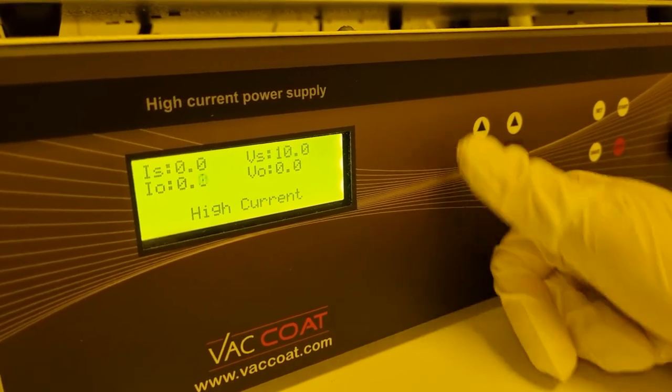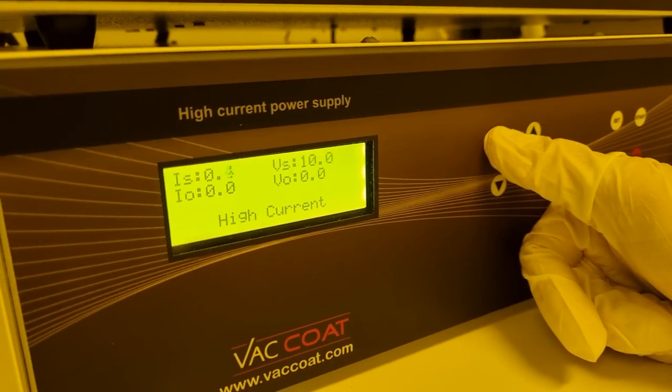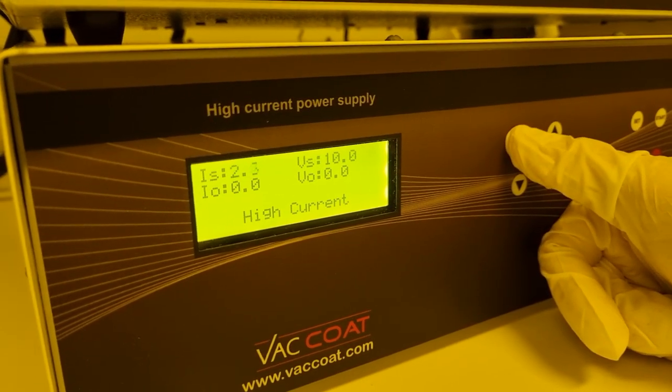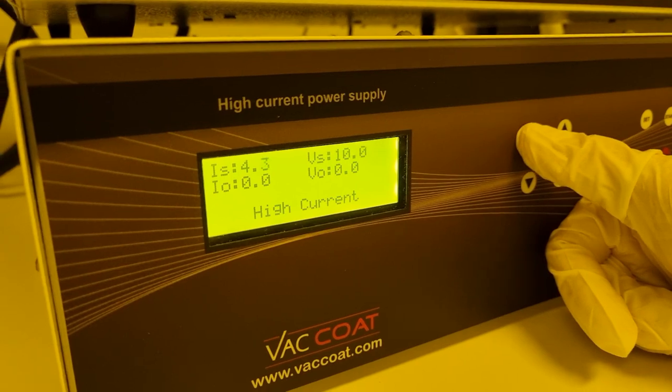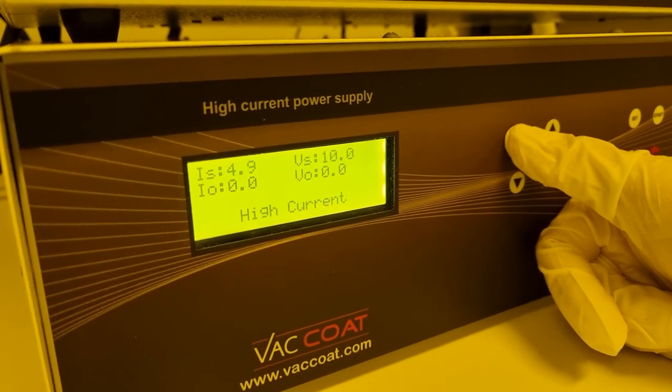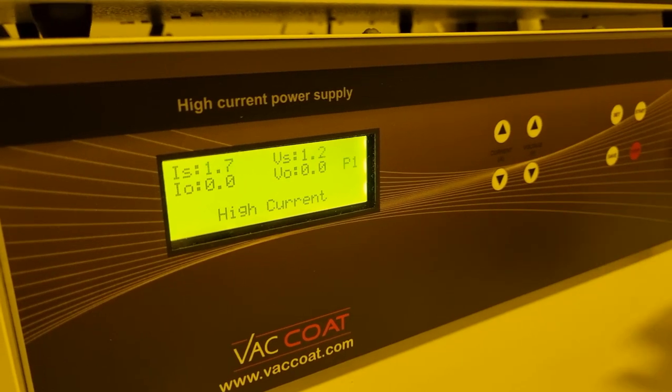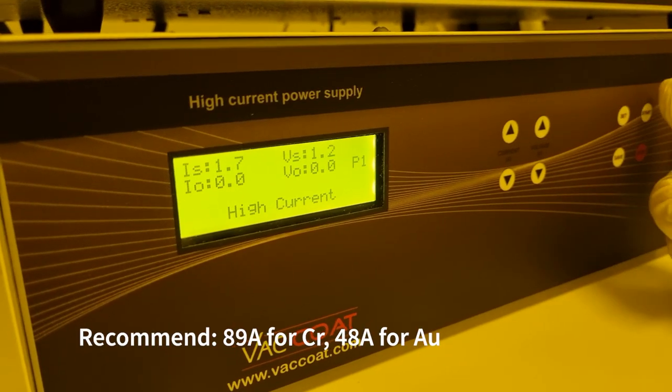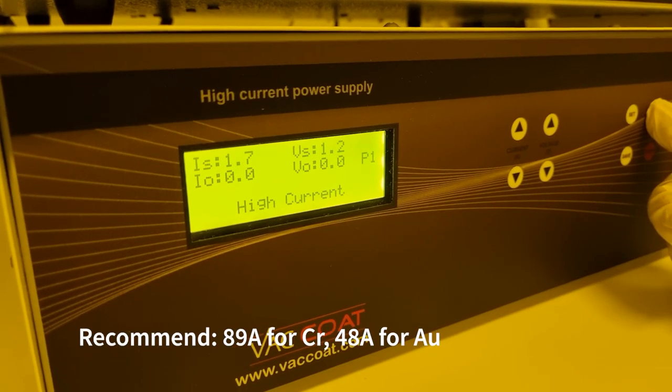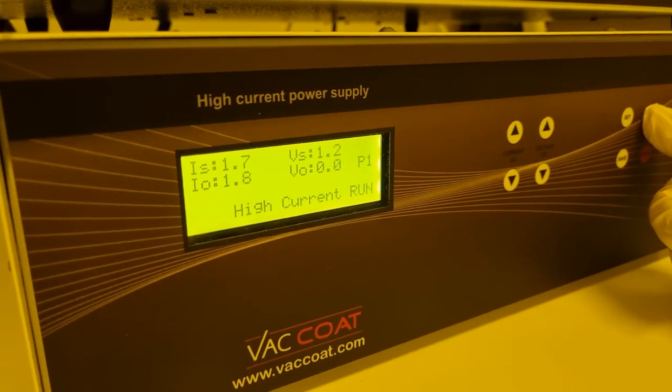The VS is the maximum voltage. VO is the read voltage. IS is the set current and IO is the actual output current. The ratio of voltage to current is the resistance in the circuit. After setting the currents to the desired value, press save.